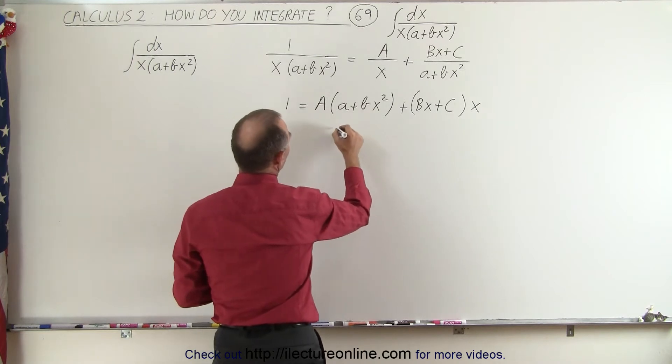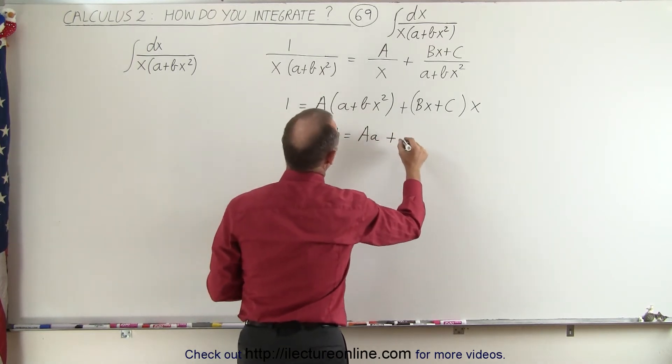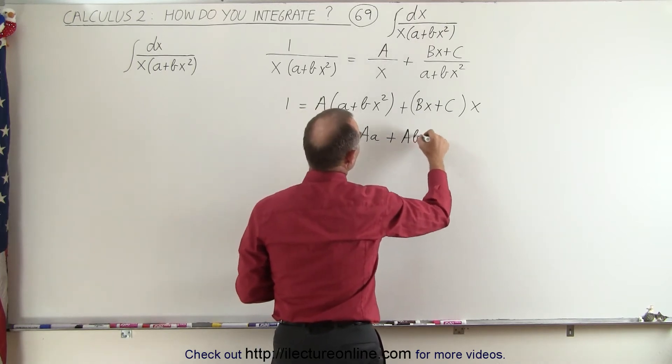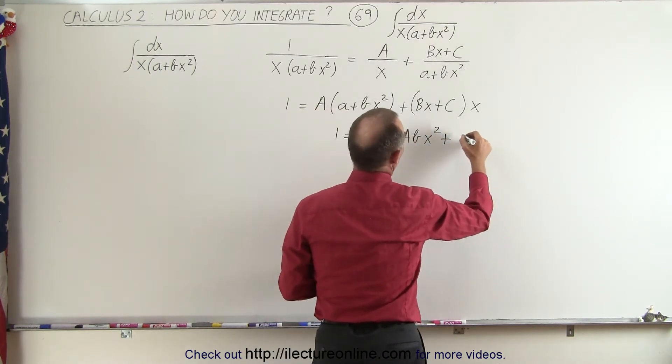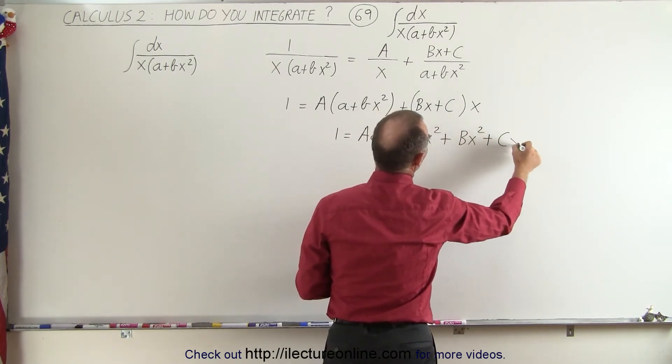We get 1 is equal to a times a plus a times bx squared plus bx squared plus cx.